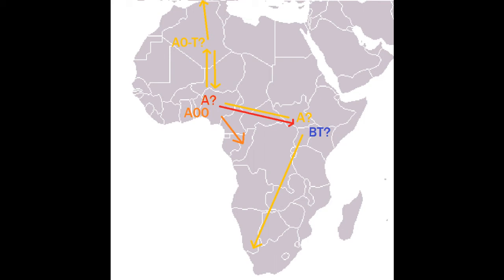BT is the haplogroup that emerged around 150,000 to 140,000 years ago, probably in East Africa from an offshoot of A. This is the lineage that all others are descended from — the almost equally deep rooted B, which exists in African archaics and pygmies, and the BT haplogroup. The other haplogroups DE and CF both stem from a common root in this BT group.